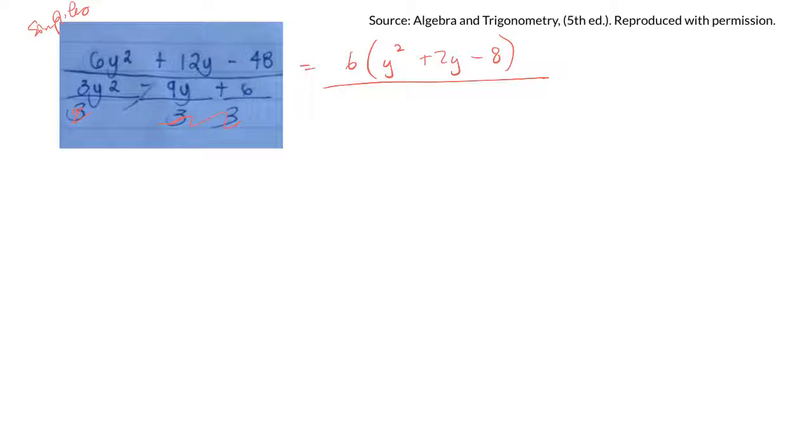On the bottom, I can factor out a 3, leaving y squared minus 3y plus 2. And then I can cancel this 3, and 3 goes into 6 twice.